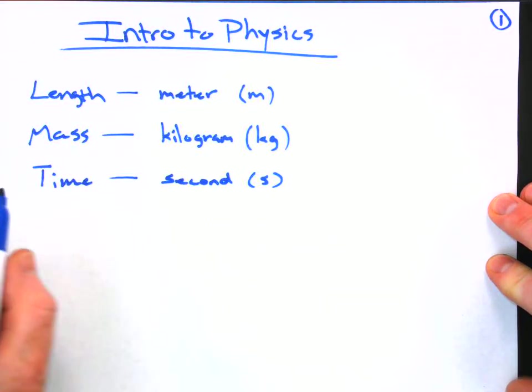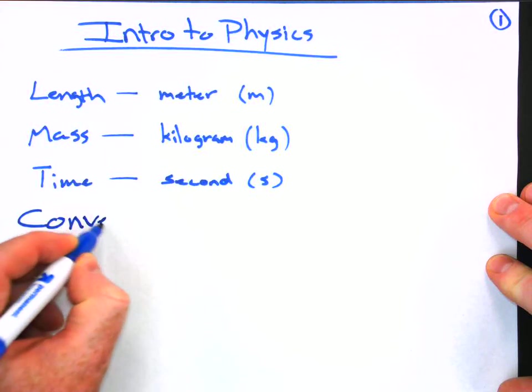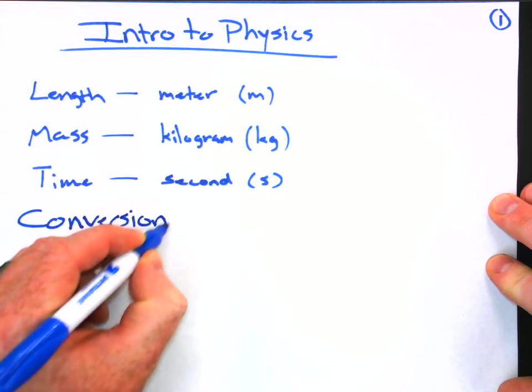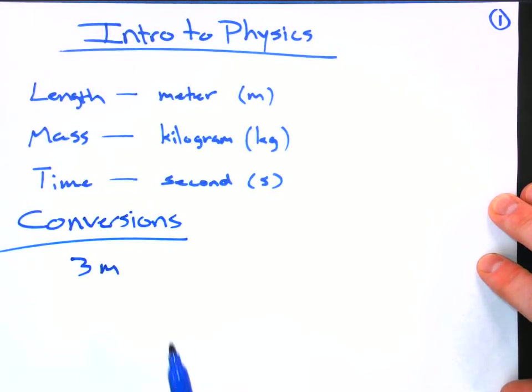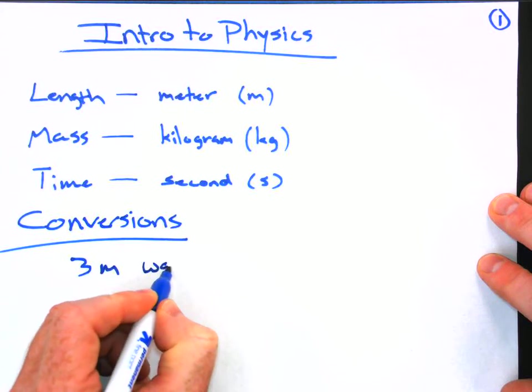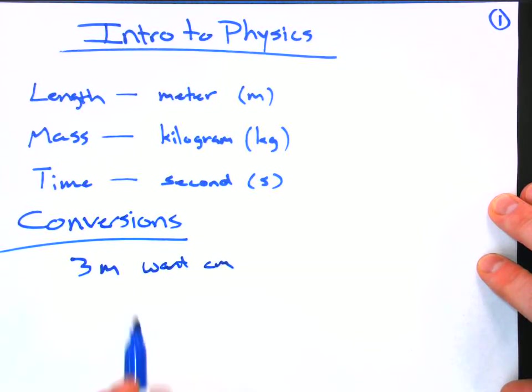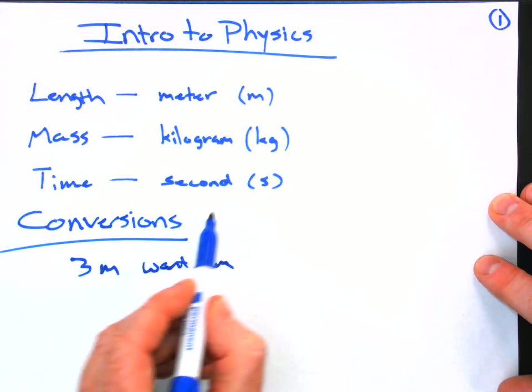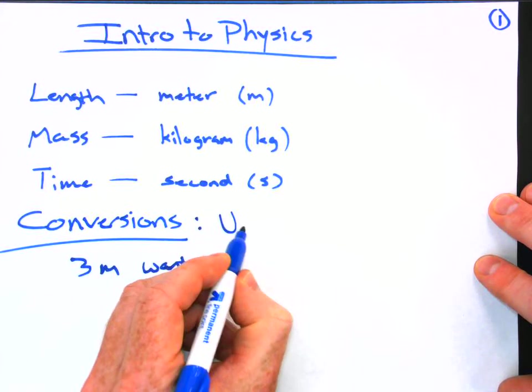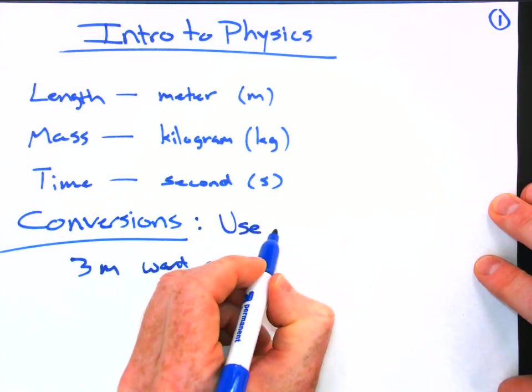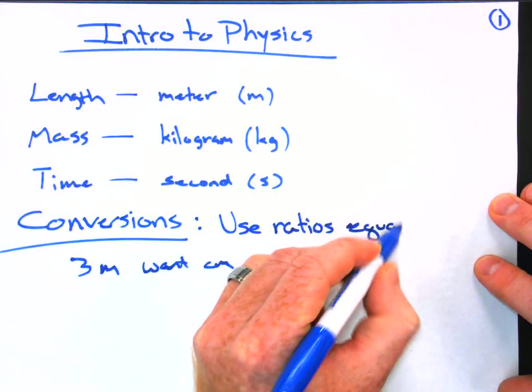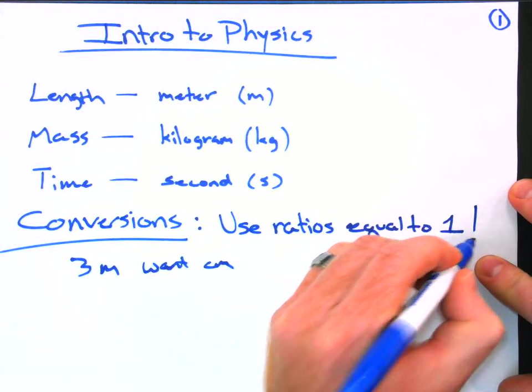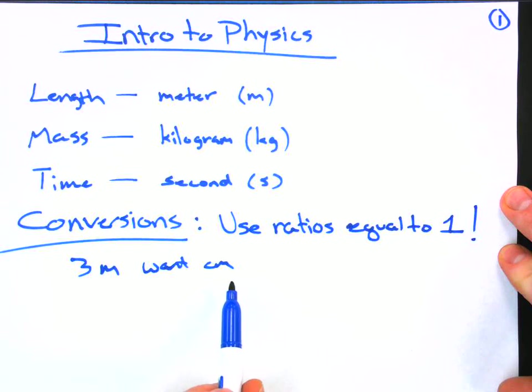So what about that? Well, unit conversions. Let's say you have a measurement of three meters and you want that in centimeters because you have some physics teacher telling you so. So what do you do? With conversions, really what you want to do is look for and use ratios equal to one. That's what you've got to do. So from three meters to centimeters, here's what we need.